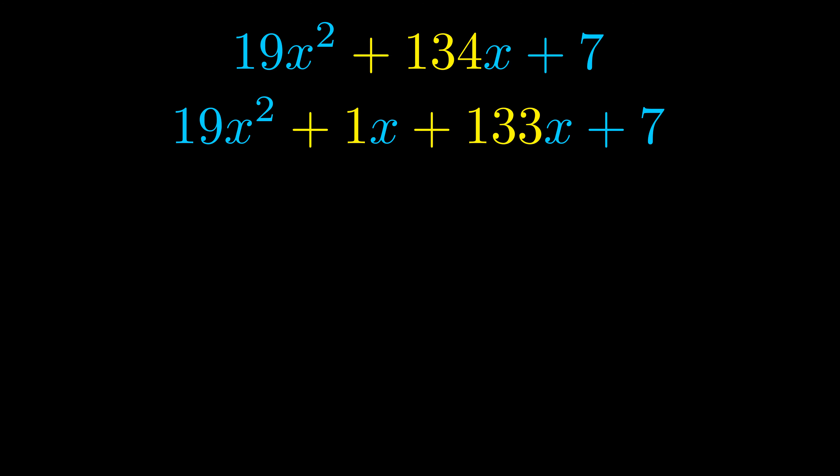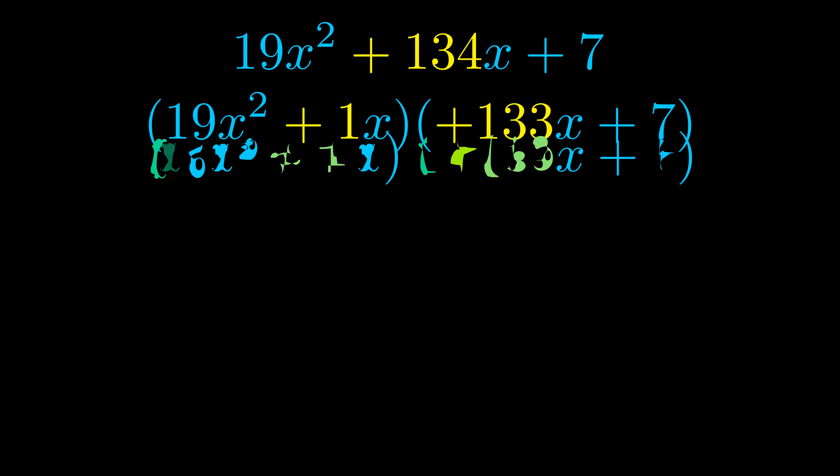Once we've done this, we go ahead and put parentheses around the first term and the last term, and we do that so that we can take the greatest common factor out of both terms. We can see the greatest common factor is now outside in green. Notice also how what remains inside of the parentheses is the same in both cases. The blue values are the same.